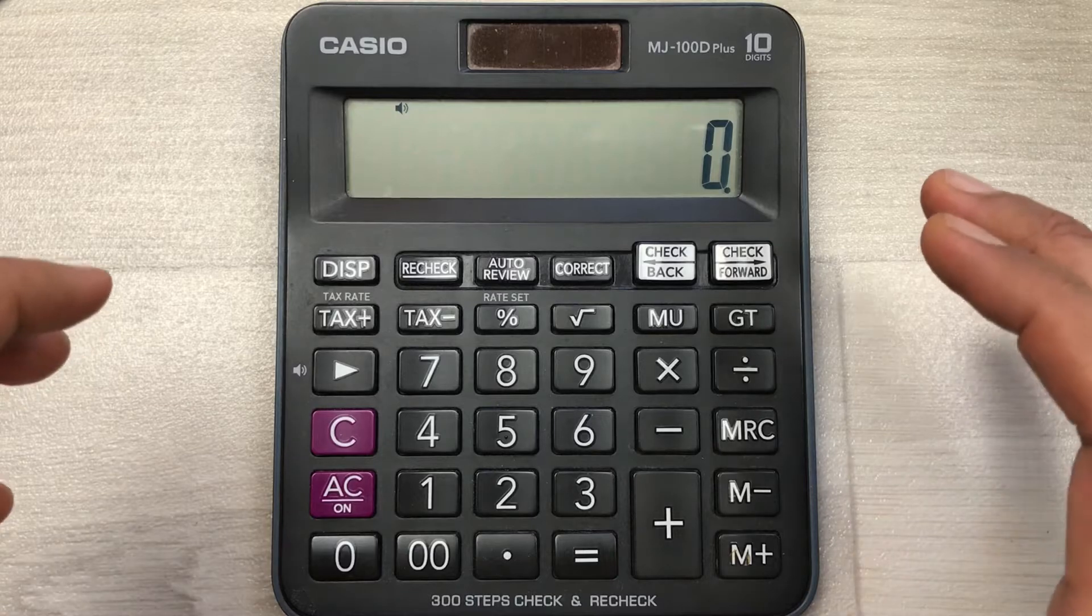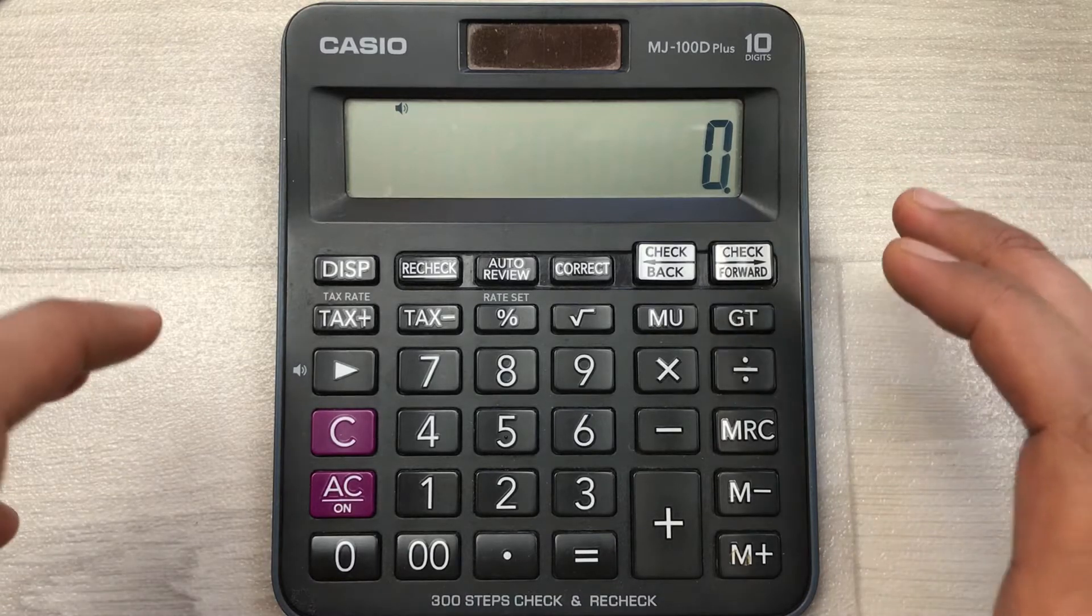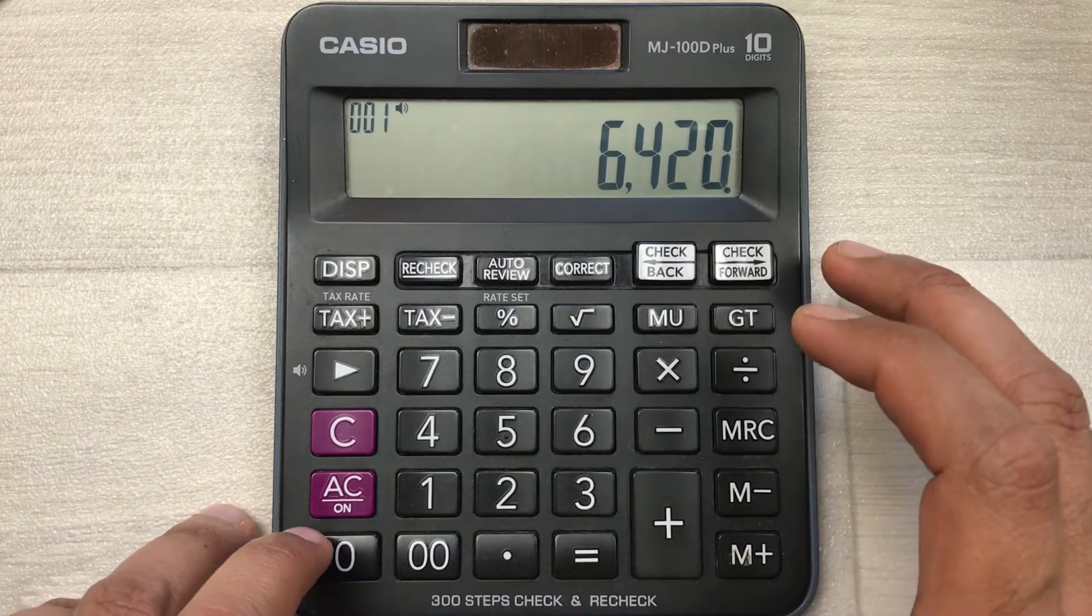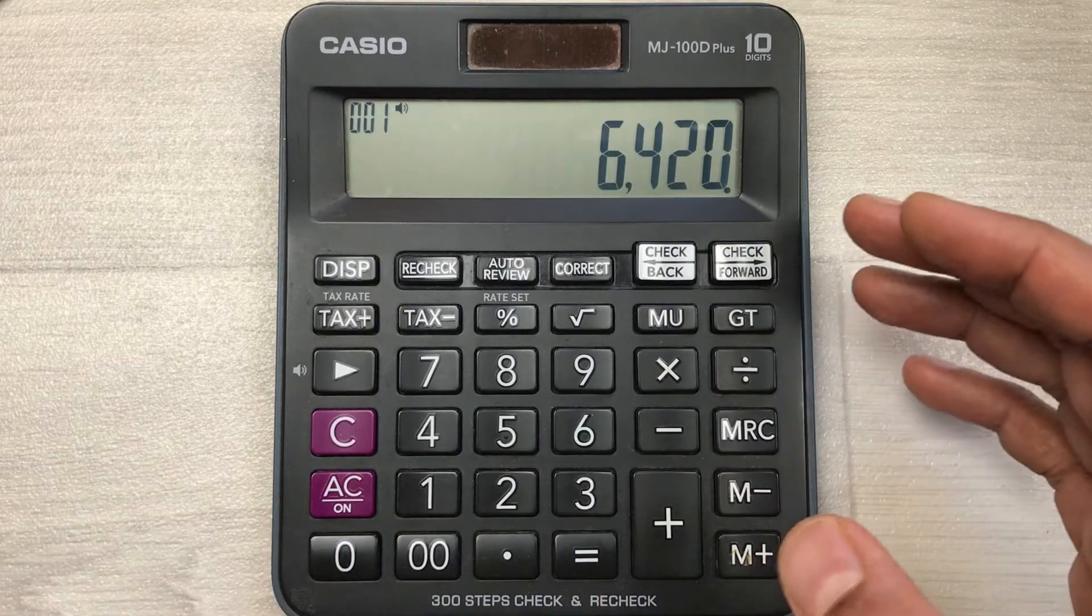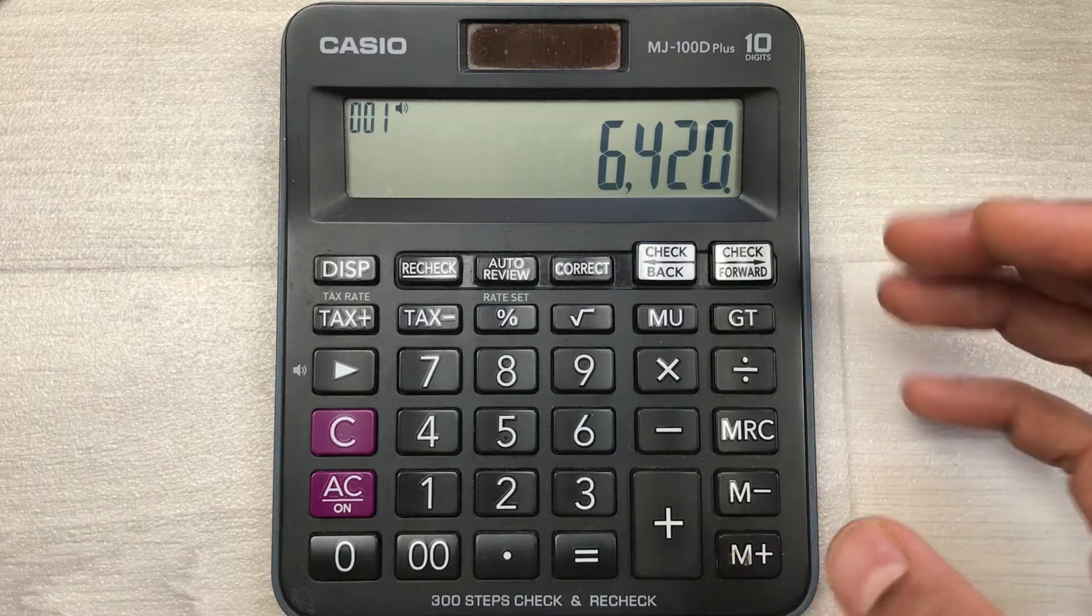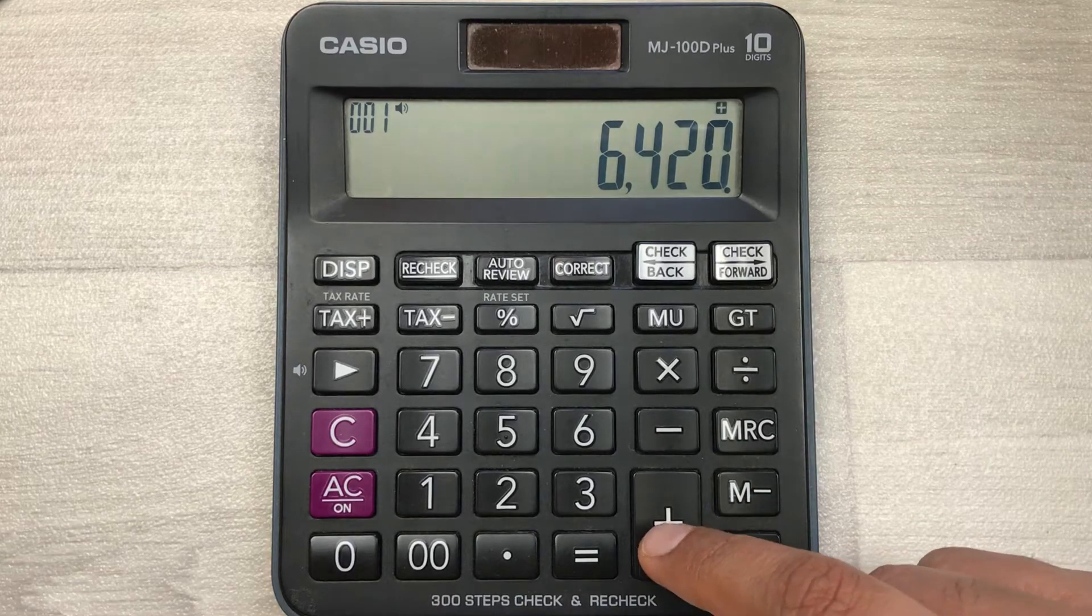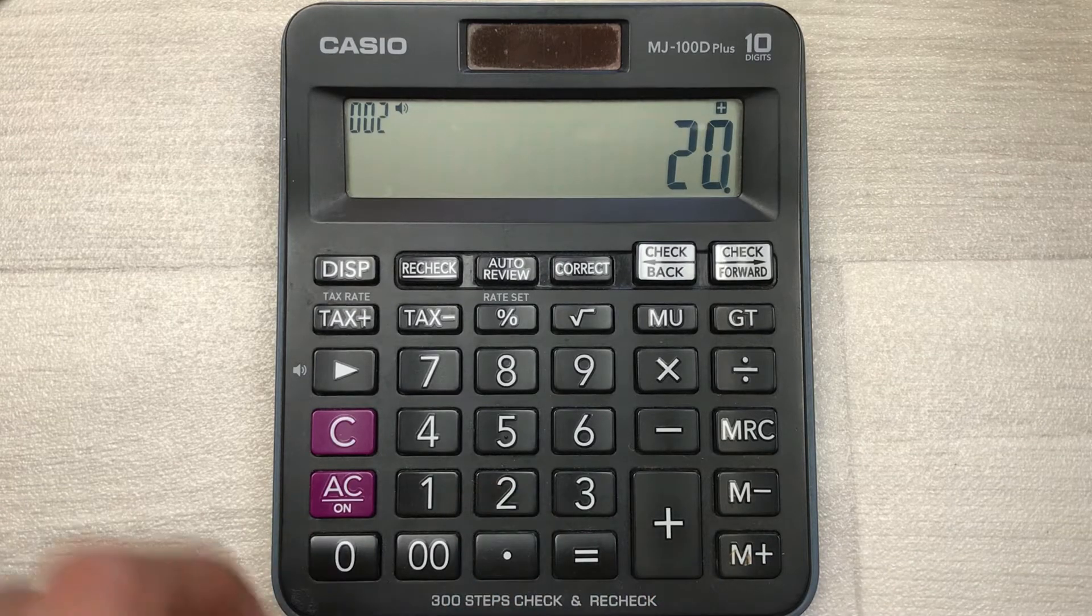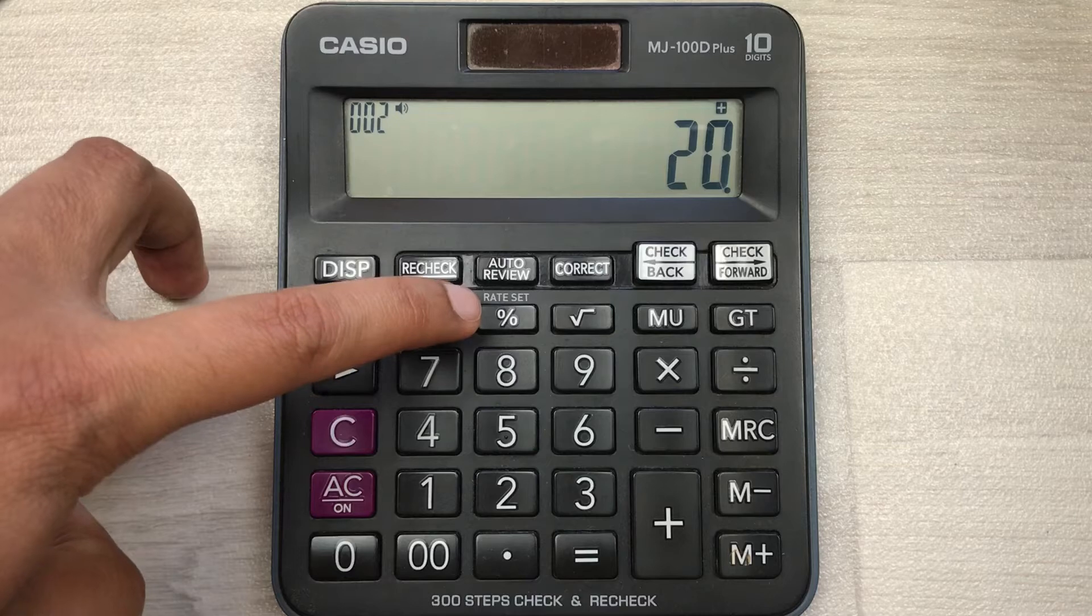So for example, you have an item and the price of that item is 6420. And now you want to increase this price by 20%. So what you have to do, you have to press this plus button, and then you have to type 20. And then at the end, you have to press this percentage button.